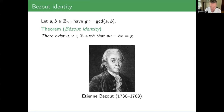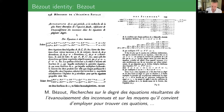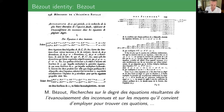So here's Étienne Bézout. Why is it that this is referred to as the Bézout identity? The best that I could come up with is that he proved it for polynomials. This is the same Bézout of: if you take the intersection of two plane curves, then count with multiplicity, and under the appropriate hypotheses, the number of intersection points is the product of the degrees. Here's one of his manuscripts.